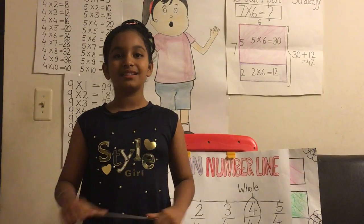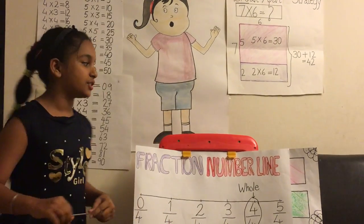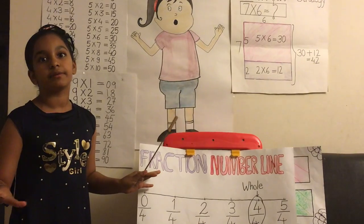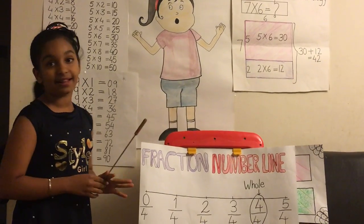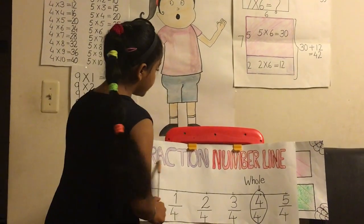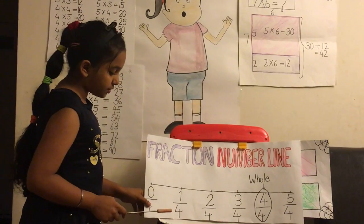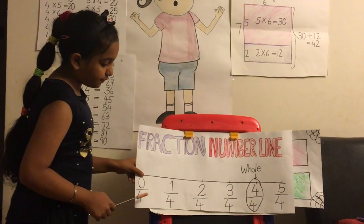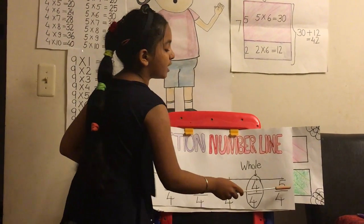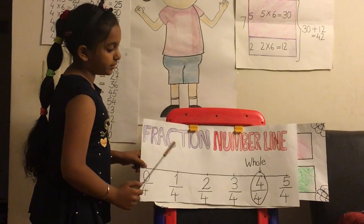Moving on to tip number five: fractions. Another super important part of third grade math. Fraction number lines is a really good strategy if you have the same denominator but different numerators.